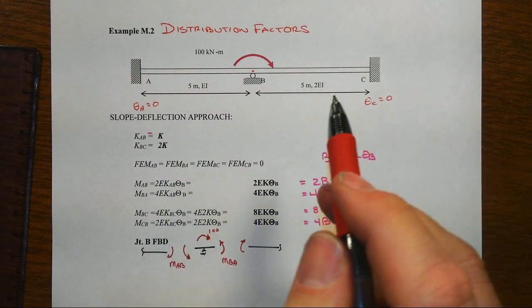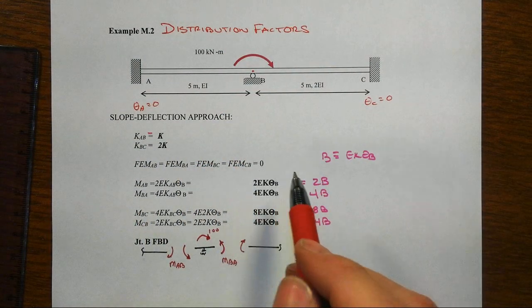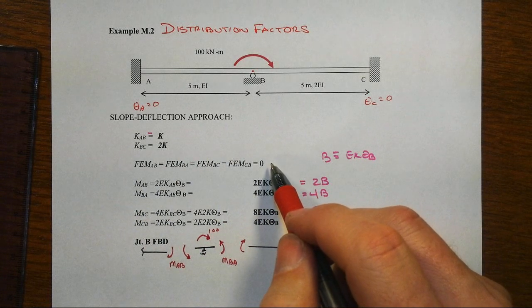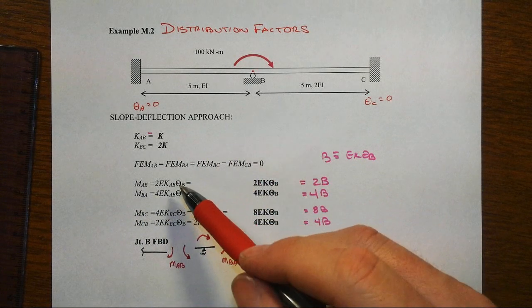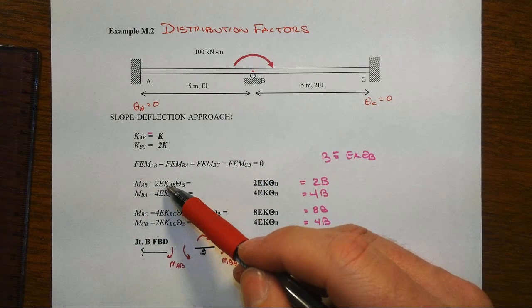We have no fixed end moments because we have no applied forces, and we have no chord rotations. That will greatly simplify our slope deflection equations for each member moment.